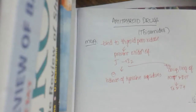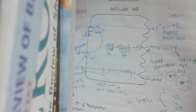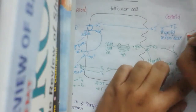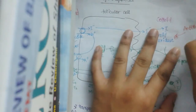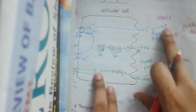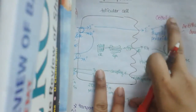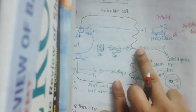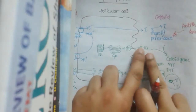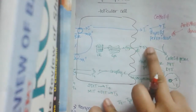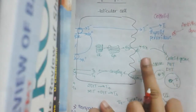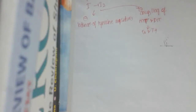Let me show you the previous diagram we drew. These antithyroid drugs basically inhibit thyroid peroxidase. So thyroid peroxidase is inhibited by antithyroid drugs. When thyroid peroxidase is inhibited, there is no conversion of iodide to iodine. The second action is that the tyrosine residues in thyroglobulin cannot combine with iodine to form MIT and DIT, because thyroid peroxidase is required for that step as well. Even exocytosis of thyroglobulin requires thyroid peroxidase, so all these are blocked by antithyroid drugs.